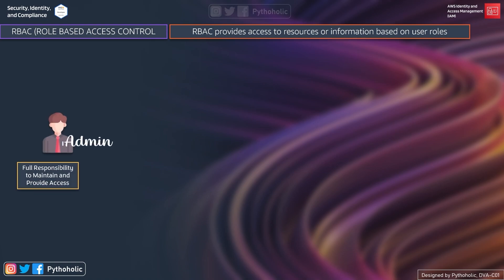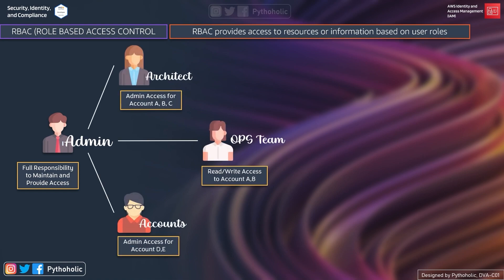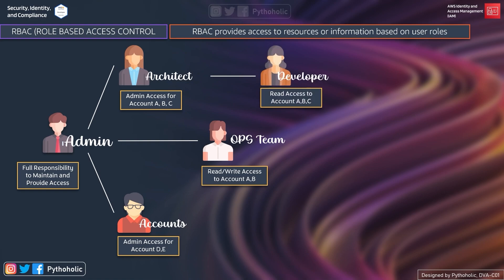This is the admin user, which based on the role of admin has full responsibility to maintain and provide access. Next we have the architect, which has admin access to accounts A, B, and C. We also have the ops team that has read-write access to accounts A and B, and we have the account team which has access to accounts D and E. And then we have the dev team, which has read-only access to accounts A, B, and C.